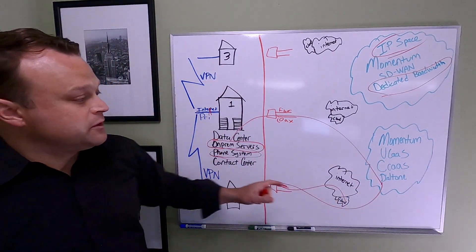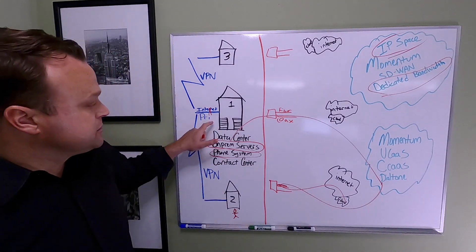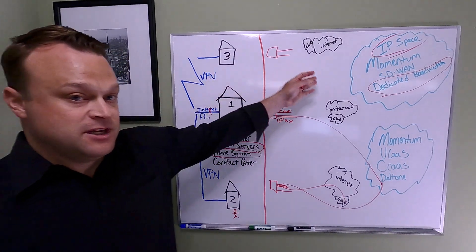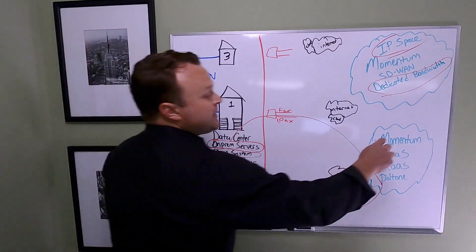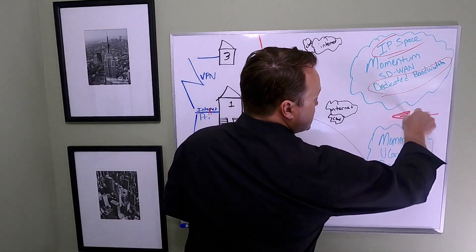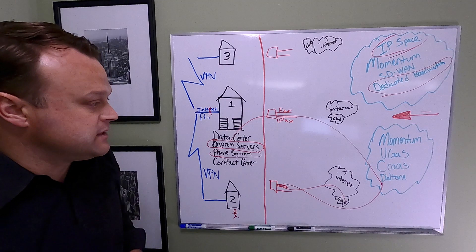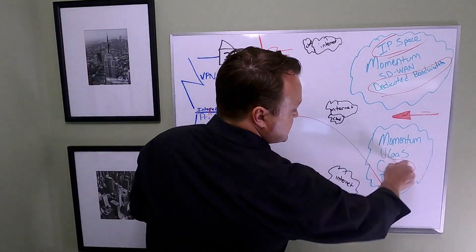From there we provided IP space from the Momentum Core. What that meant was their on-prem servers that still exist right now are IP with the local ISP in their market. But if they lose that internet, the ISP addresses are not available.